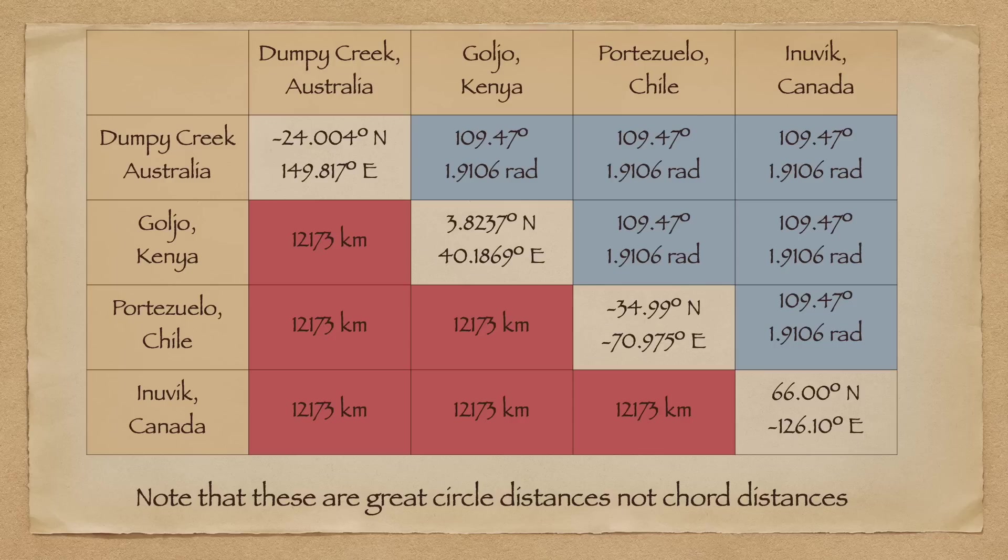This table shows four points: Dumpy Creek, Australia, Guadjoa, Kenya, Portozuelo, Chile, and a point in Inovic, Canada. The angular separation between each pair of points is shown in blue above the diagonal of the table. The great circle distance approximation between each pair of points is shown in red below the diagonal. These results were all obtained using the spherical distance approximation shown previously.